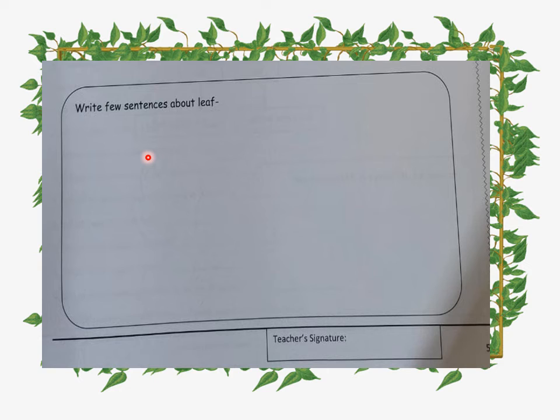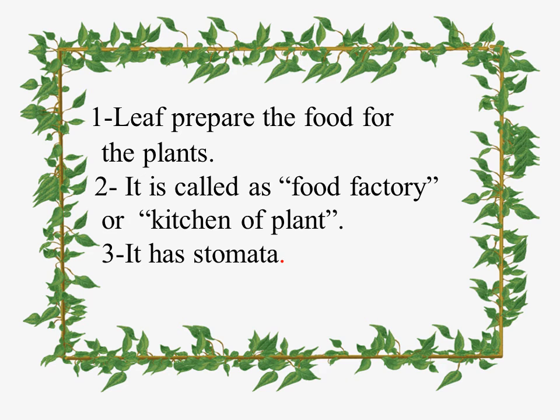In this slide I wrote the first sentence: Leaves prepare the food for the plant. It is called as the food factory or kitchen of the plant. It has stomata. These three sentences you can write. Otherwise you can add also. Understood? And your handwriting should be good.